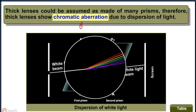Thick lenses could be assumed as made of many prisms, therefore thick lenses show chromatic aberration due to dispersion of light. The variation of refractive index with wavelength may be more pronounced in some media, but in vacuum, the speed of light is independent of wavelength.